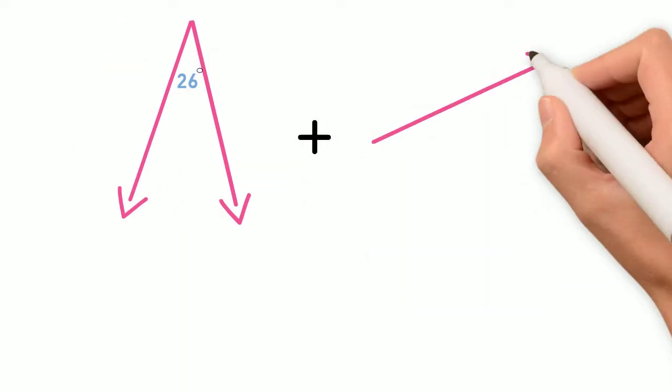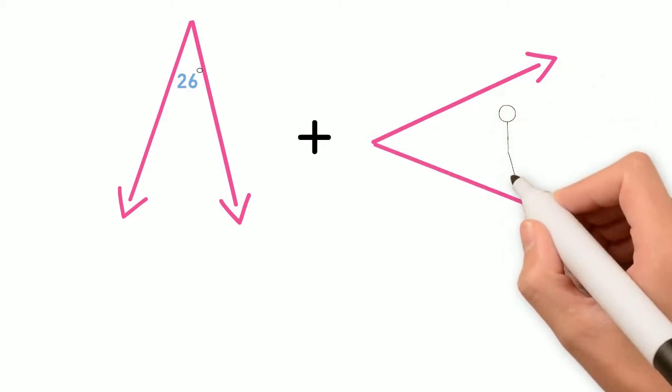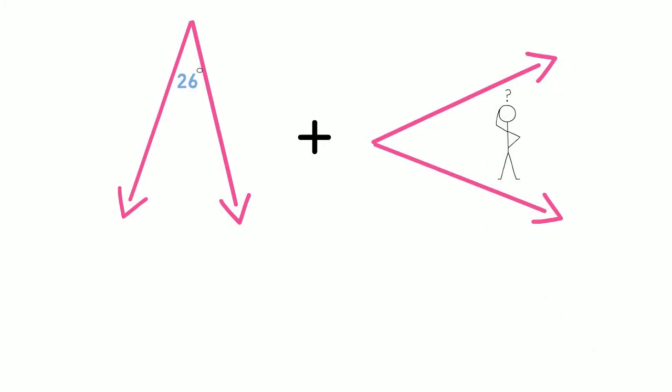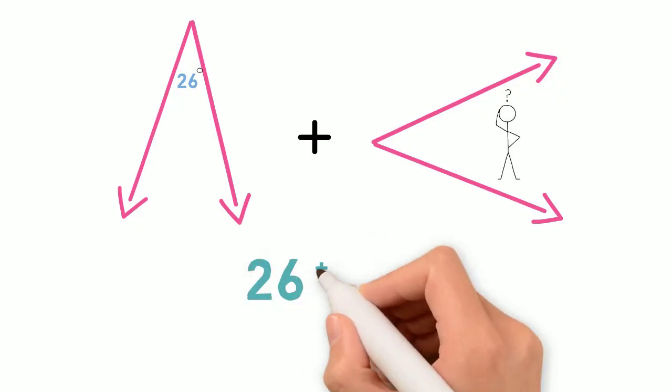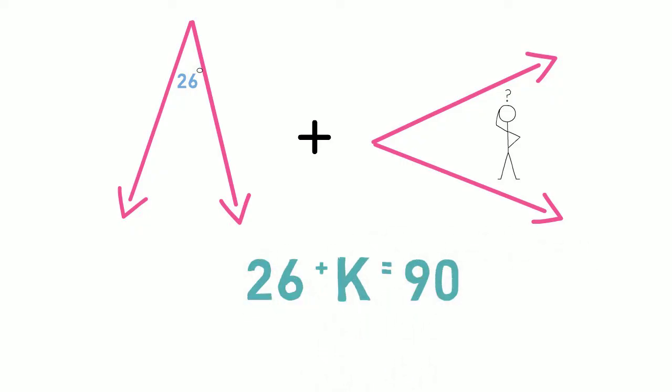Let's look at this 26 degree angle. What other angle measurement would I need to add to 26 to make a complementary angle? Let's create an equation to help us figure this out. We have 26 plus some number k equals 90. Because to make a complementary angle, two angles have to add together to equal 90.